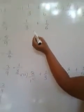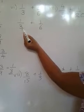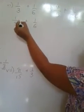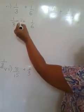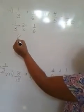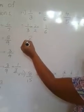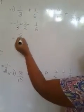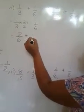2 tenths. Here we must make it into 6. How it becomes 6? Multiply by 2. 1 times 2 is 2. 3 times 2, 6. Added 1 sixth.